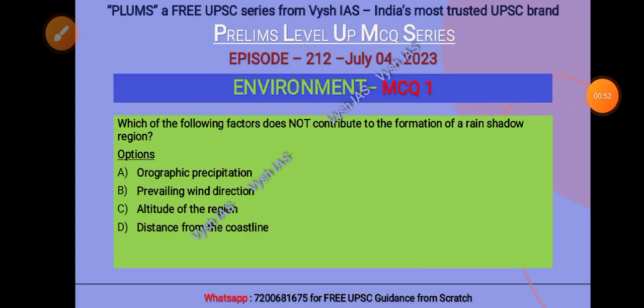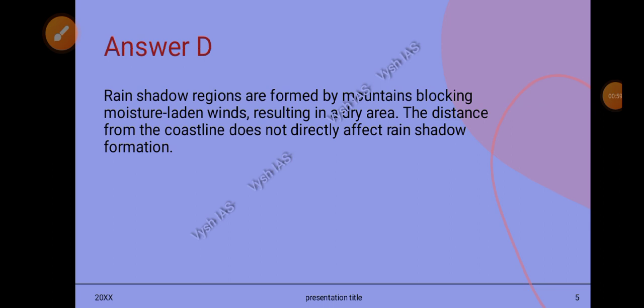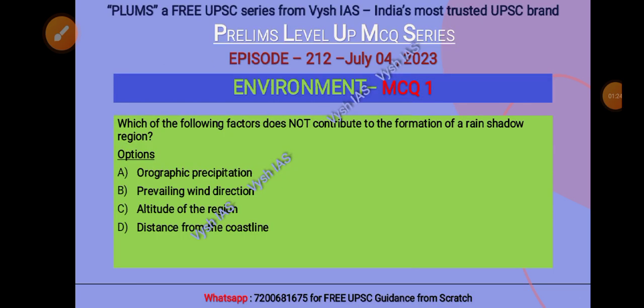and D) distance from the coastline. The answer is D. Rain shadow regions are formed by mountains blocking moisture-laden winds, resulting in a dry area. The distance from the coastline does not directly affect rain shadow formation. Orographic precipitation, wind direction, and altitude all contribute to rain shadow formation.